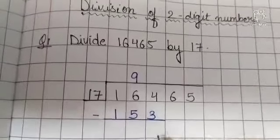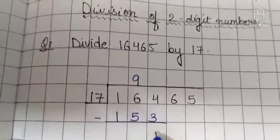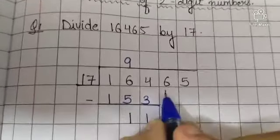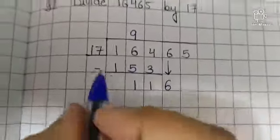4 minus 3? 1. 6 minus 5? 1. 1 minus 1? 0. Now bring down 6.